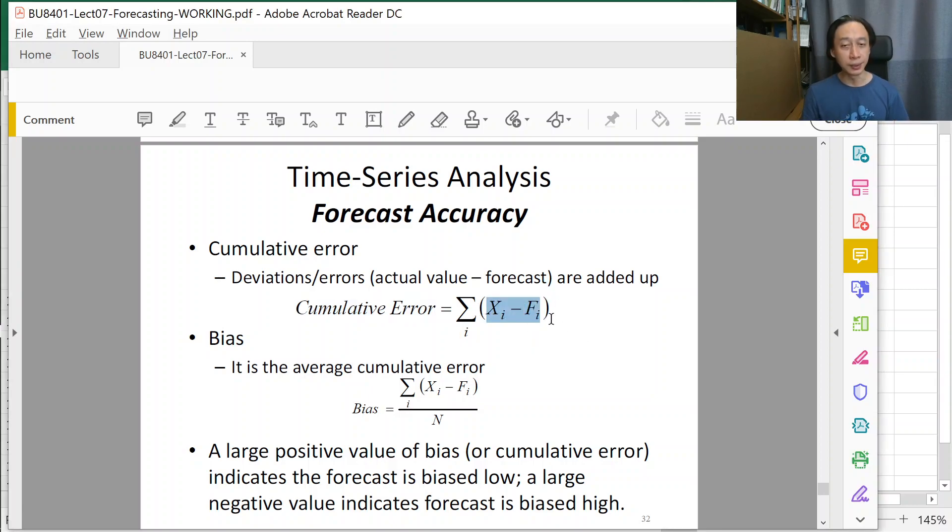So basically error is the data minus our forecast. We think it is 100 but data is 110, so our error is going to be plus 10. And error itself has a sign - it can be positive, it can be negative, because we can overestimate, we can over forecast or we can under forecast.